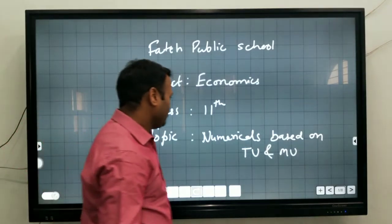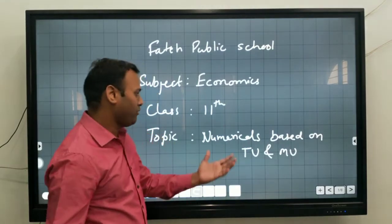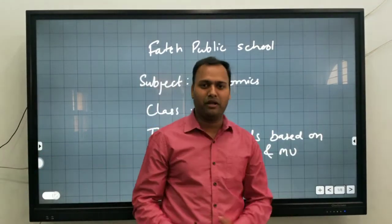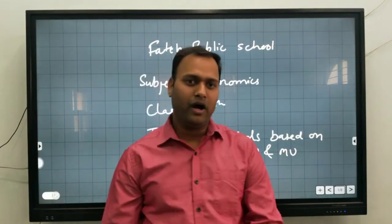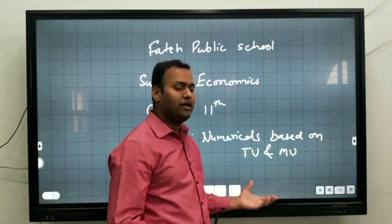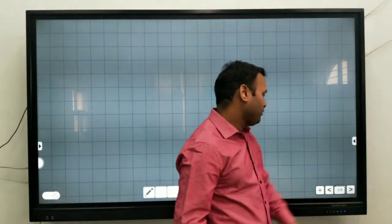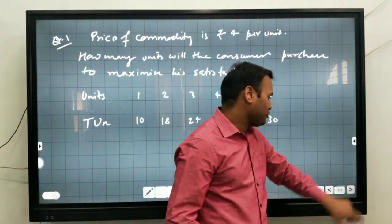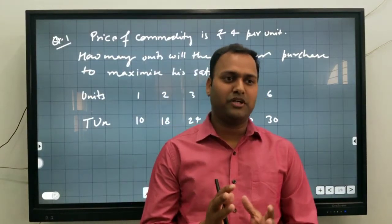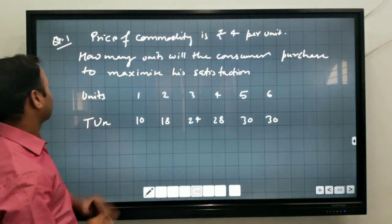Good morning to all. Today I am going to explain some numerical problems based on TU and MU. We have already discussed some numerical problems based on TU and MU. Now some different kinds of questions related to total utility and marginal utility. We also have to calculate the maximum satisfaction of the consumer.